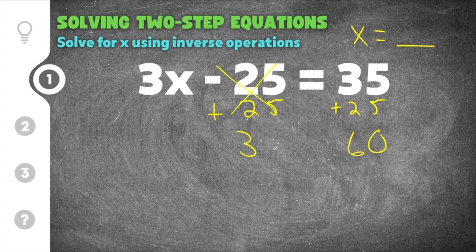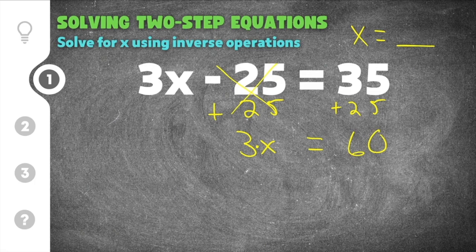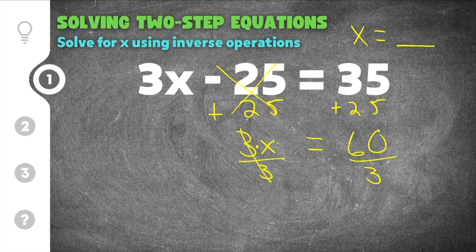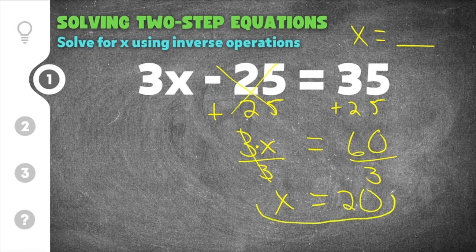Bringing down the 3x and the equal sign, we now have 3x equals 60. We need to get x by itself. The coefficient means this is 3 times x, so to undo that we divide by 3 — because division is the opposite of multiplication. We divide both sides by 3 so the 3s cancel on the left, leaving just x. 60 divided by 3 is 20, so our solution to this two-step equation is x equals 20.